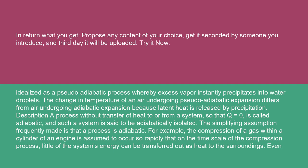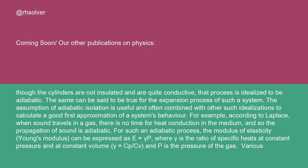A process without transfer of heat to or from a system, so that Q equals zero, is called adiabatic, and such a system is said to be adiabatically isolated. The simplifying assumption frequently made is that a process is adiabatic. For example, the compression of a gas within a cylinder of an engine is assumed to occur so rapidly that, on the time scale of the compression process, little of the system's energy can be transferred out as heat to the surroundings. Even though the cylinders are not insulated and are quite conductive, that process is idealized to be adiabatic.